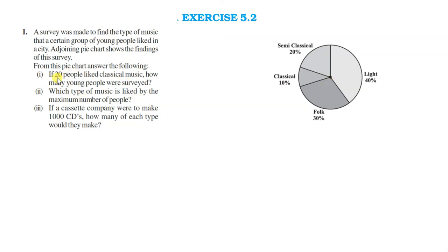Now, if 20 people liked classical music, then how many young people were surveyed? If 20 people liked classical music, then how many people were surveyed? This will be found out. The number of young people who were surveyed here can be found as 100 multiplied by 20 divided by 10, because classical music was liked by 10 percent of people and there are total 20 people.